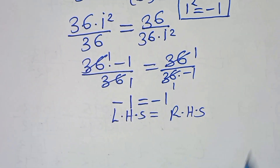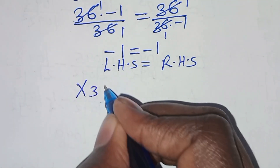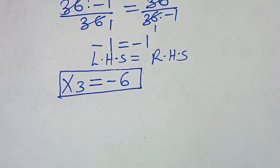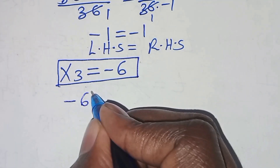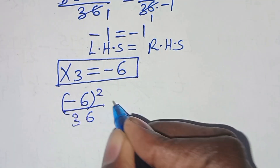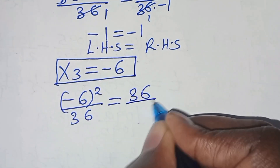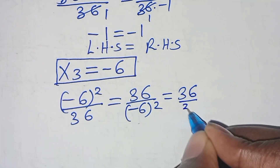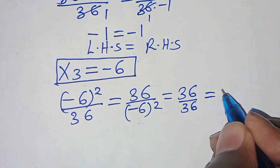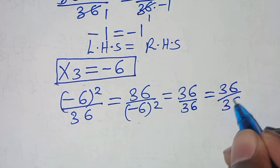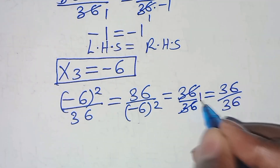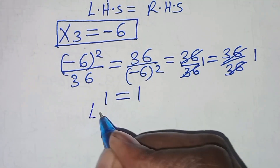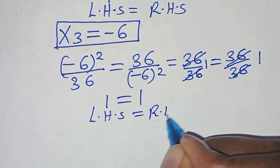Let's verify x₃ equals minus 6. We have (minus 6) squared over 36 equals 36 over (minus 6) squared. Since (minus 6) squared equals 36, this gives 36 over 36 equals 36 over 36, which simplifies to 1 equals 1. The left-hand side equals the right-hand side.